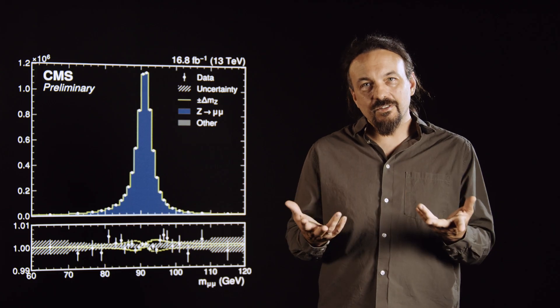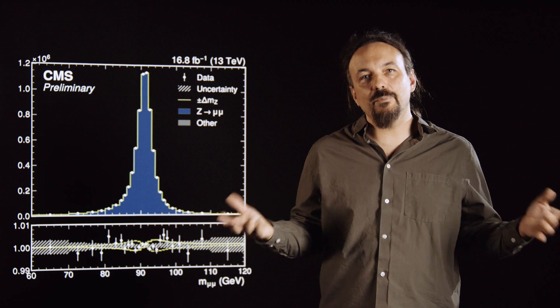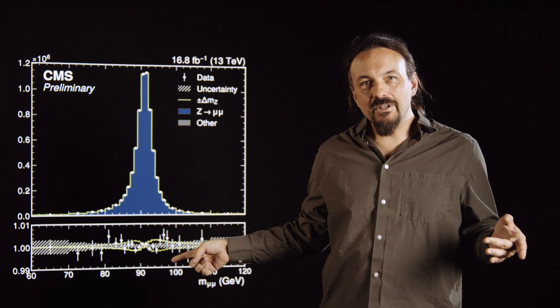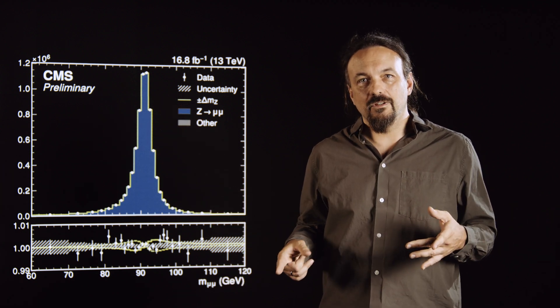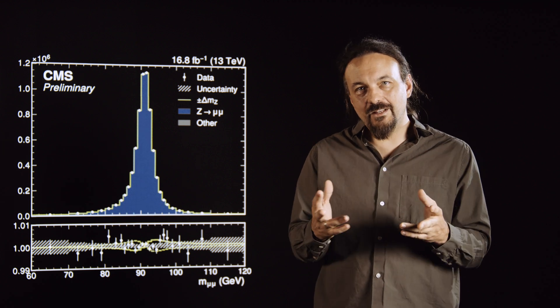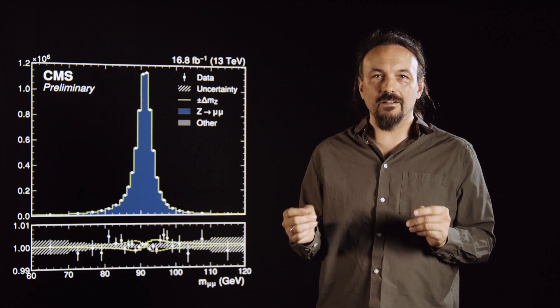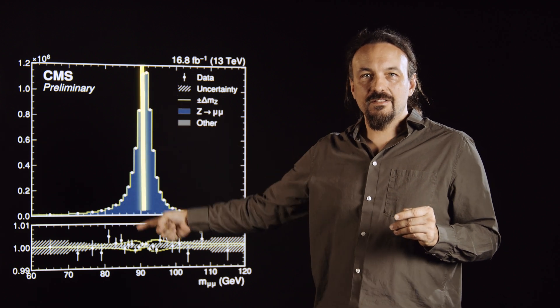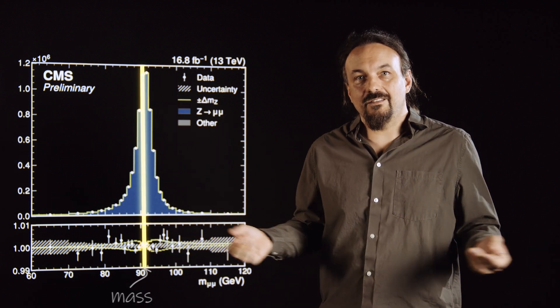We take the momenta of the two muons from the decay of the Z. And from these two momenta, we can calculate what's called the invariant mass of the two muon system. You can plot this invariant mass for many, many pairs of muons, and you'll get a peak at the mass of the Z boson. There's some subtleties here, but basically if you measure the momenta of the muons correctly, then the position of the peak is the mass of the Z boson. And that's it.